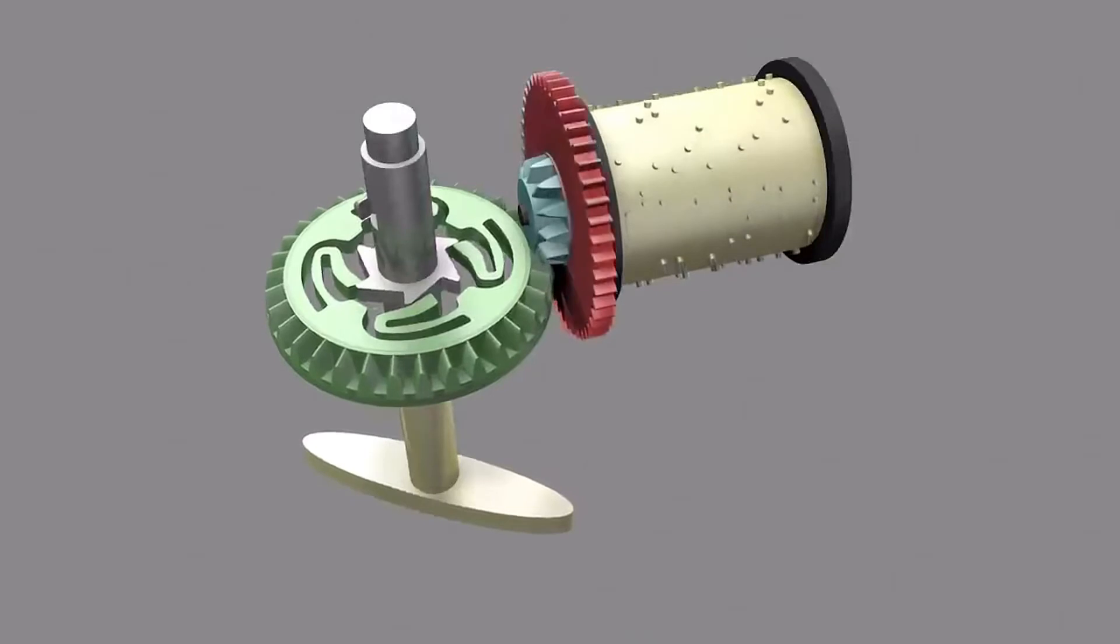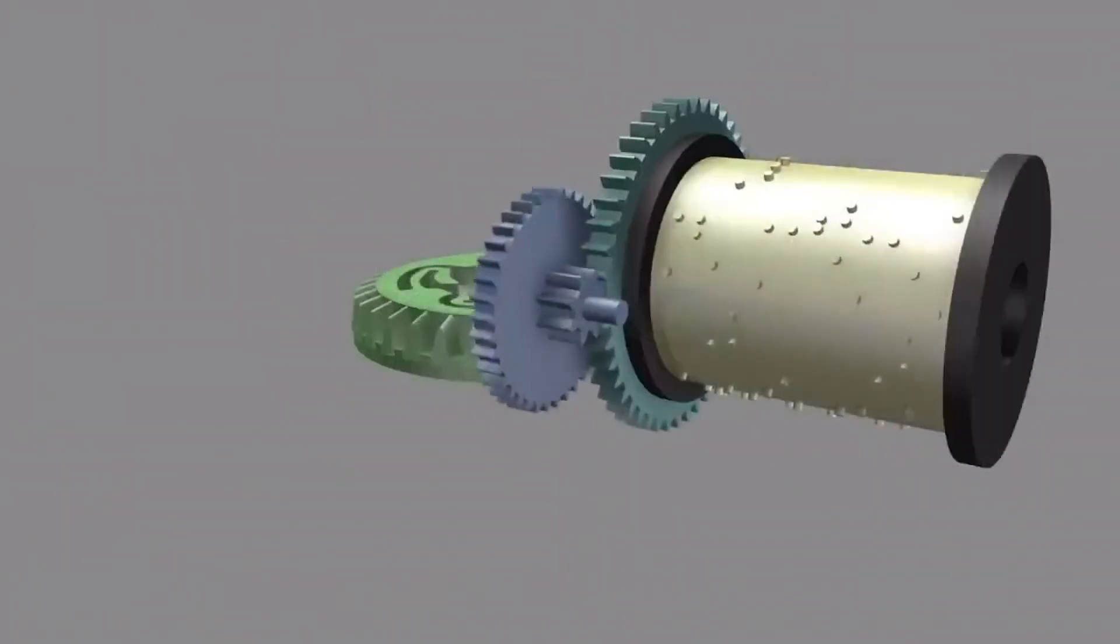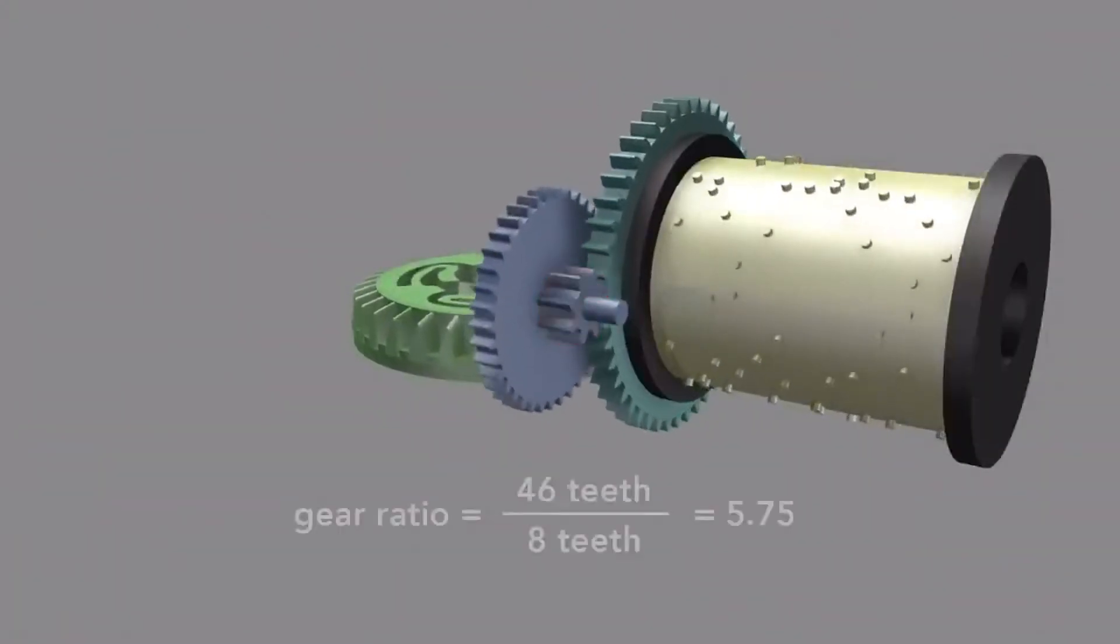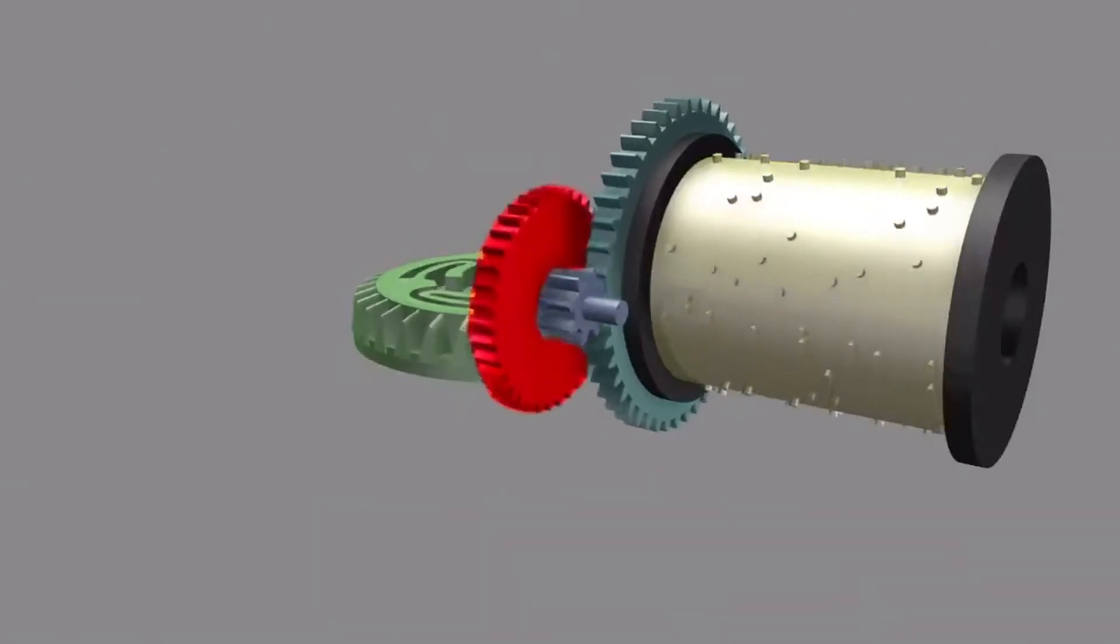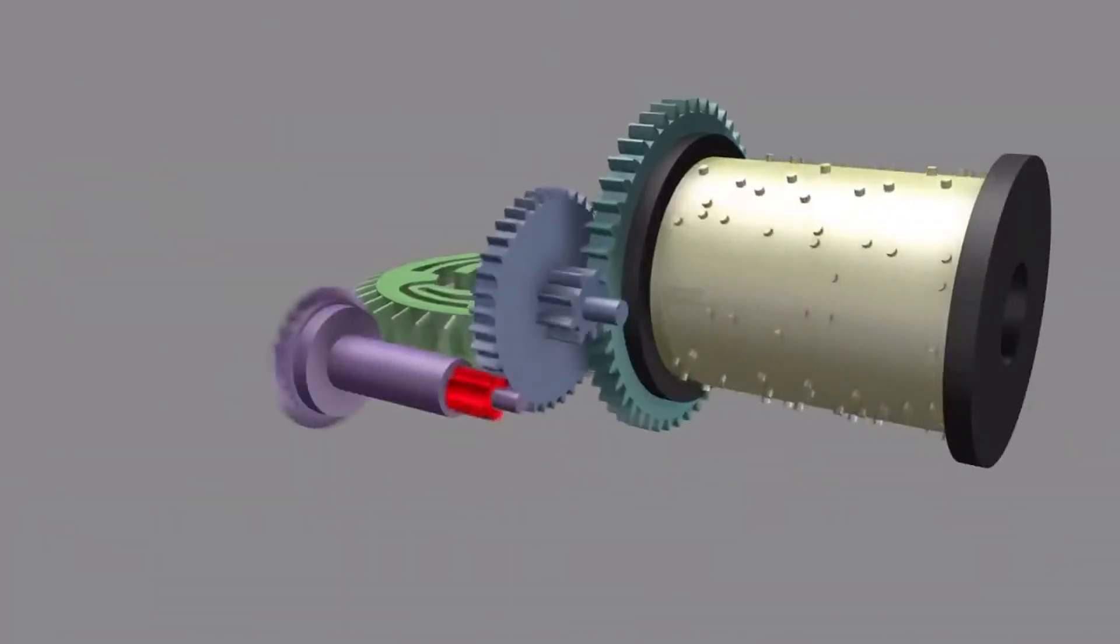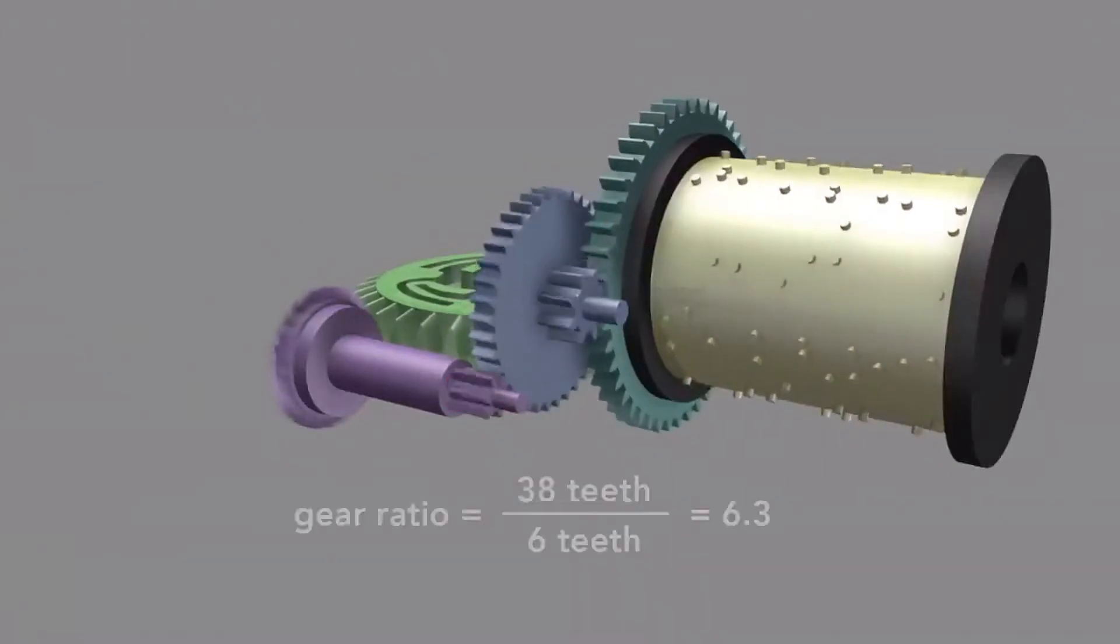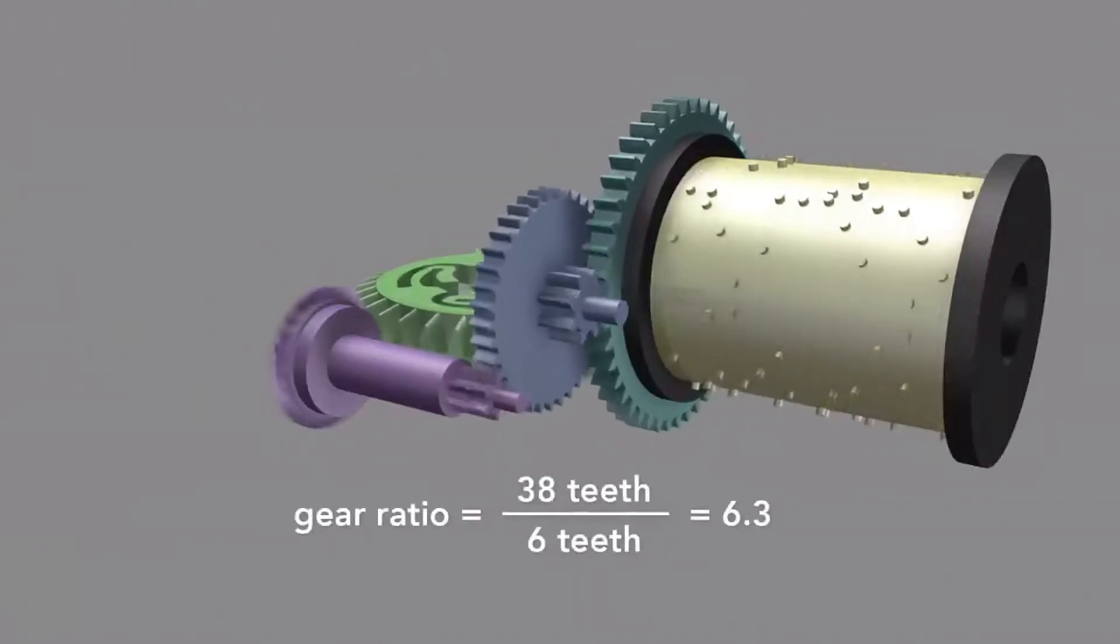The drum is also affixed to a larger gear, which engages another smaller gear, this time multiplying the rotational speed by 5.75 times. The larger gear on this piece engages the smaller end of another spur gear, further multiplying the rate by 6.3 times.